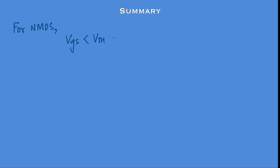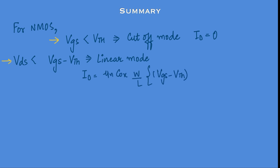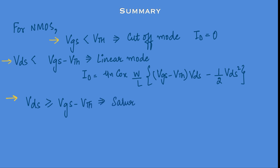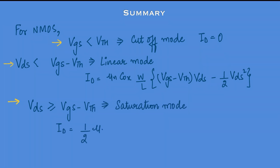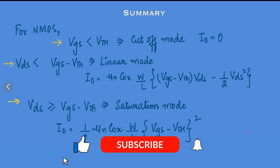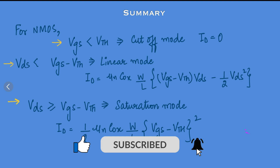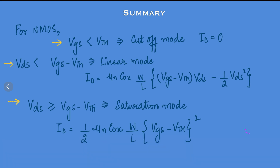For the nMOS: if VGS is less than VTH it is the cut-off mode and drain current is zero; when VDS is less than VGS minus VTH it is the linear or triode mode and the drain current equation is as shown; in saturation, VDS is greater than VGS minus VTH and the drain current is as shown. This is how the drain current equation varies in the nMOS transistor depending on the mode of operation, which in turn depends on the terminal voltage. If you like this video then hit the like button, share it with your friends, and subscribe to the channel. In the next video I will show you how to solve nMOS-based questions that have appeared in the GATE exam — with these formulas discussed, these are enough to solve those questions. I will meet you soon in the next video. Keep learning!